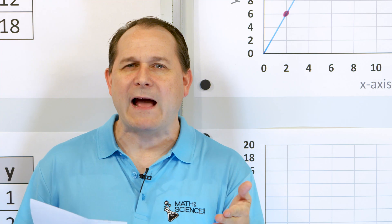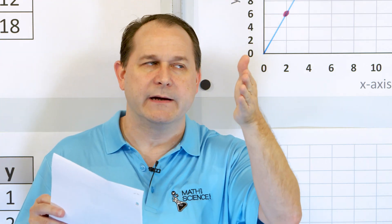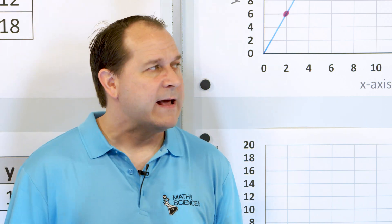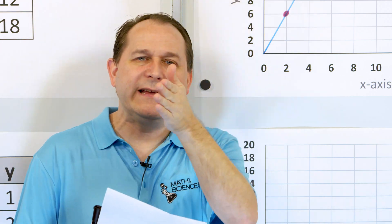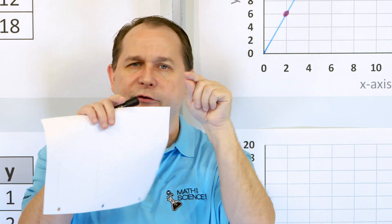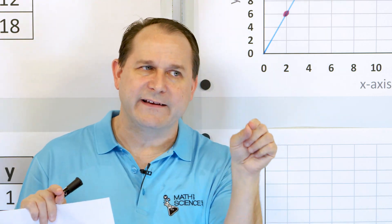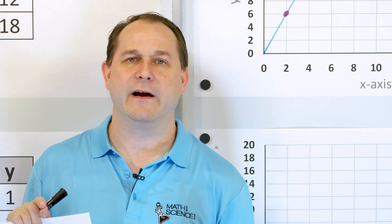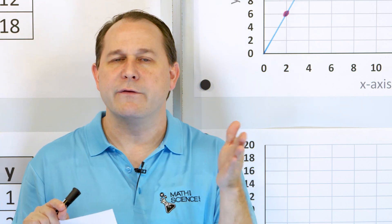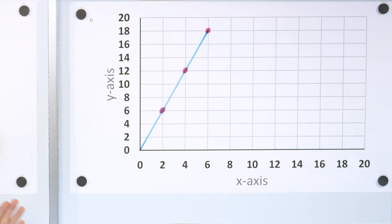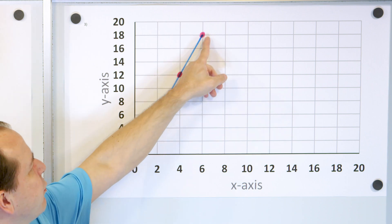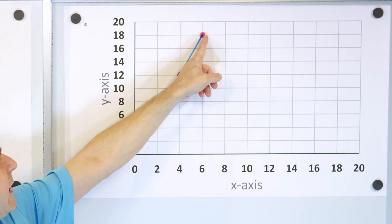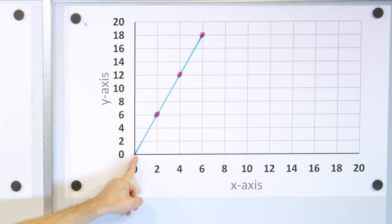What we figured out is that if we take the Y coordinate and divide it by the X coordinate, and if we get the same answer — that is, when we take the ratio of Y to X for every pair — then we know it forms a proportional relationship. And when it does, the points form a straight line.